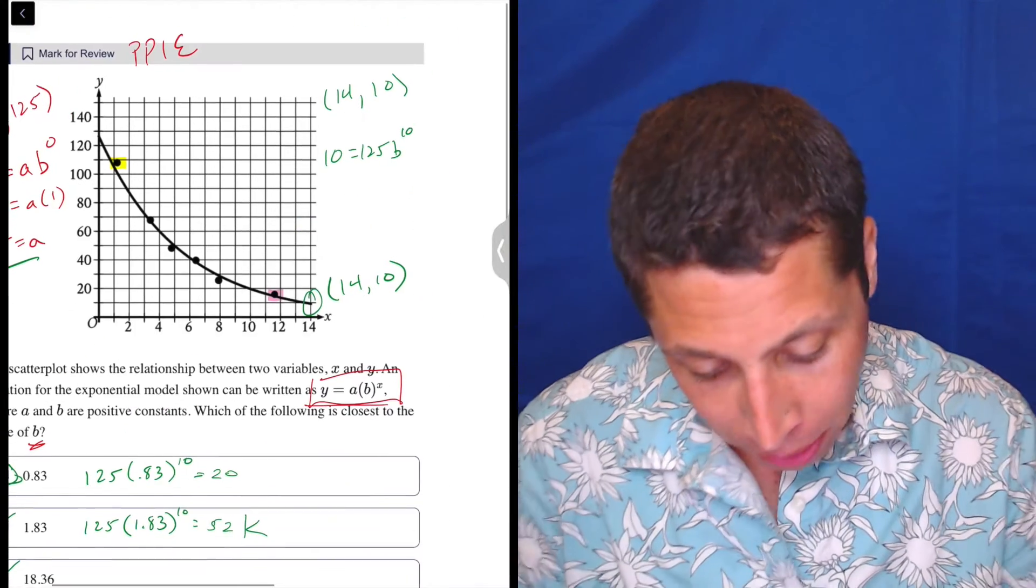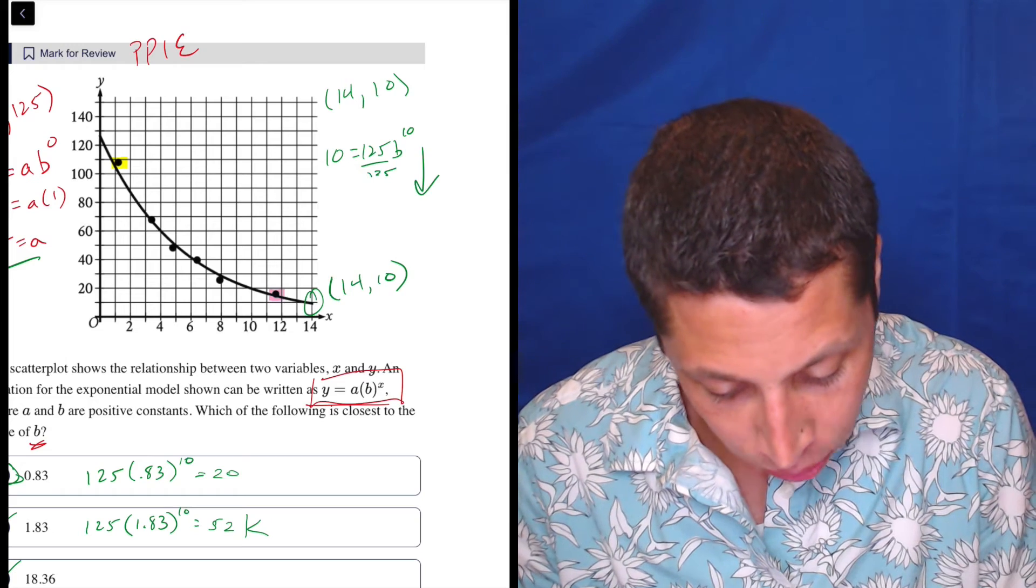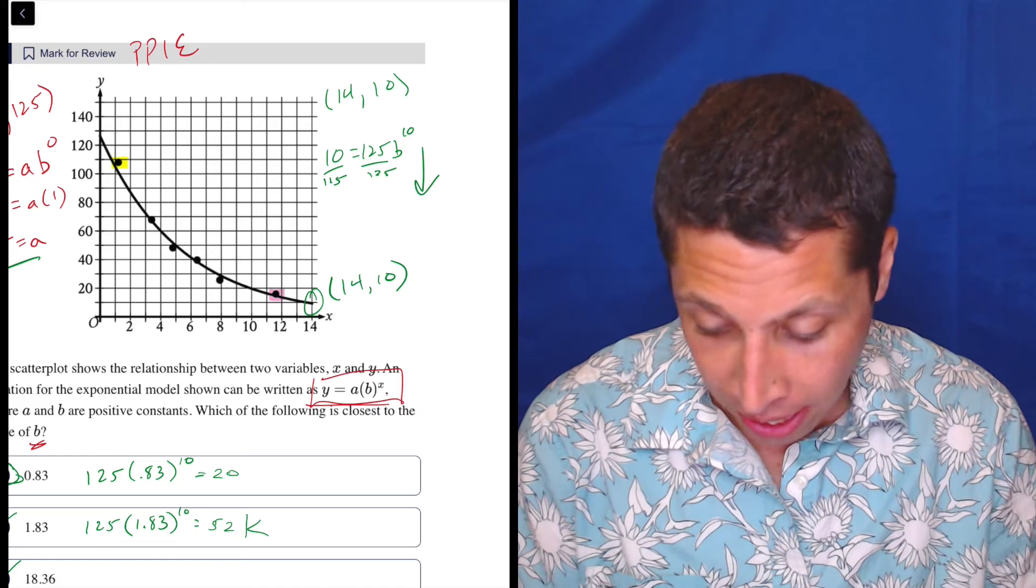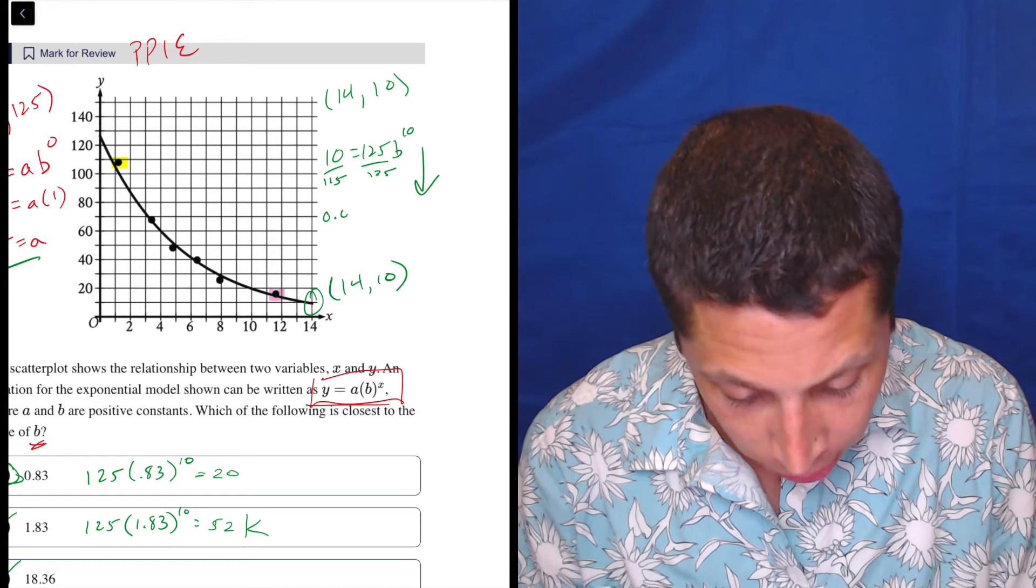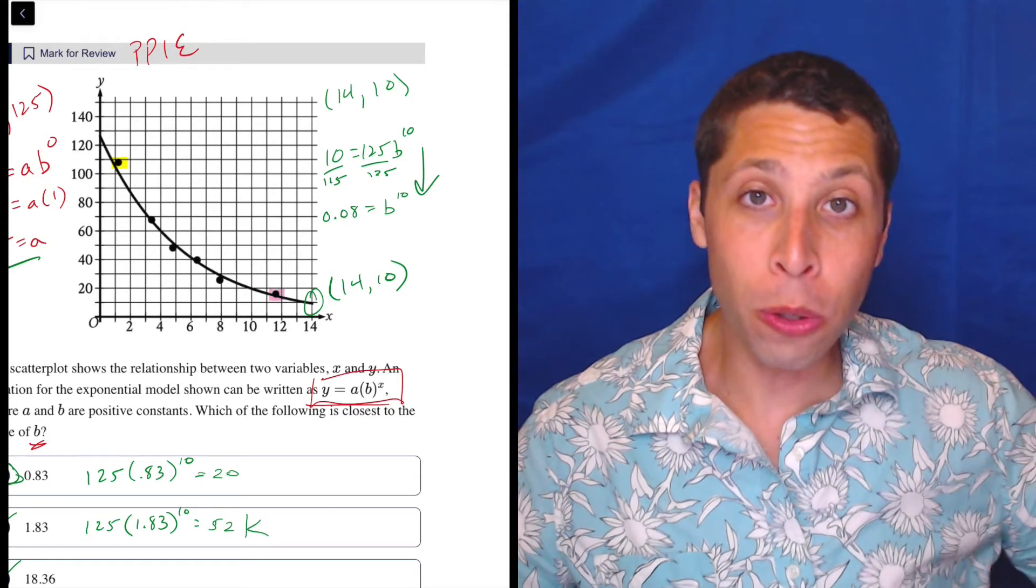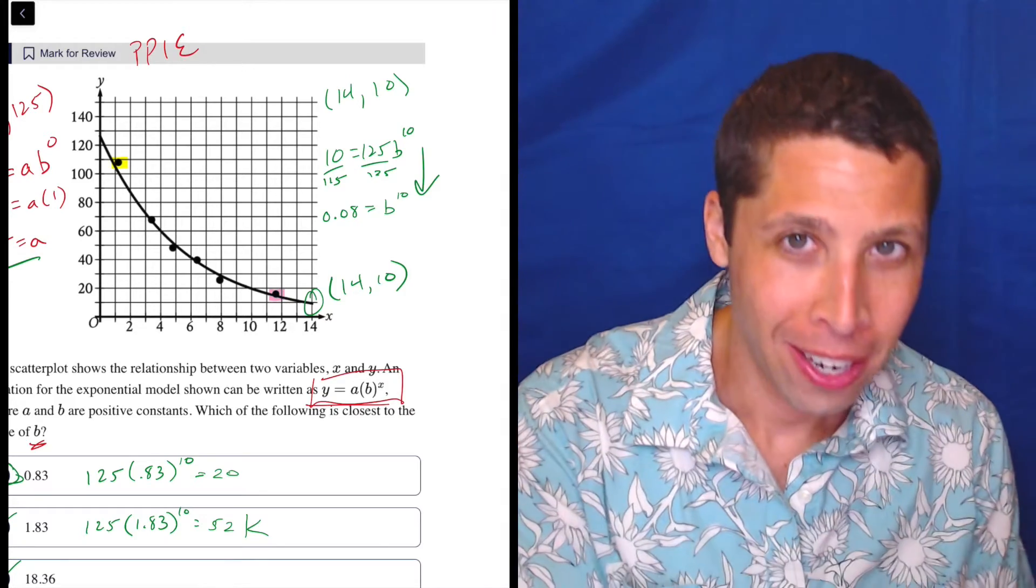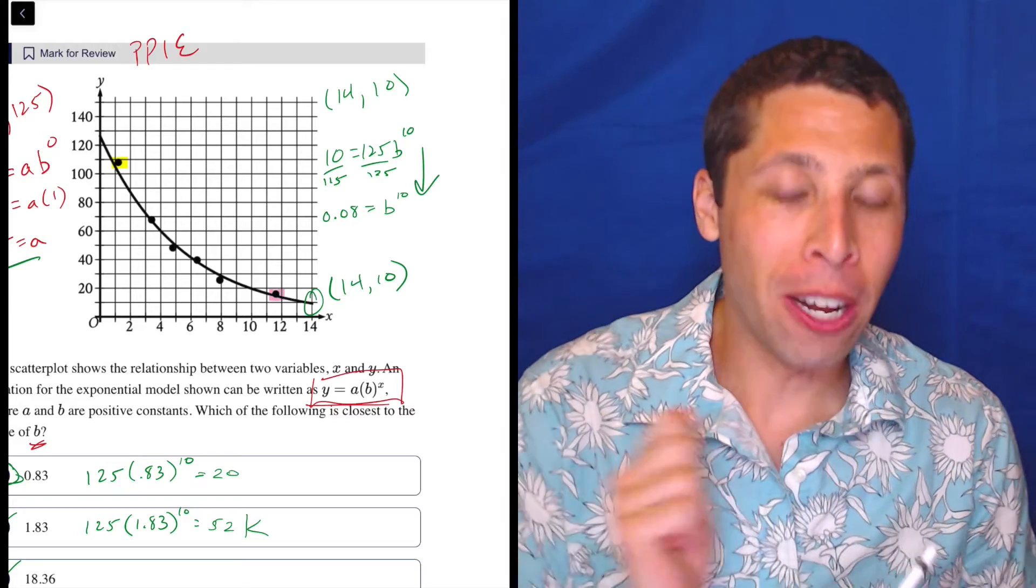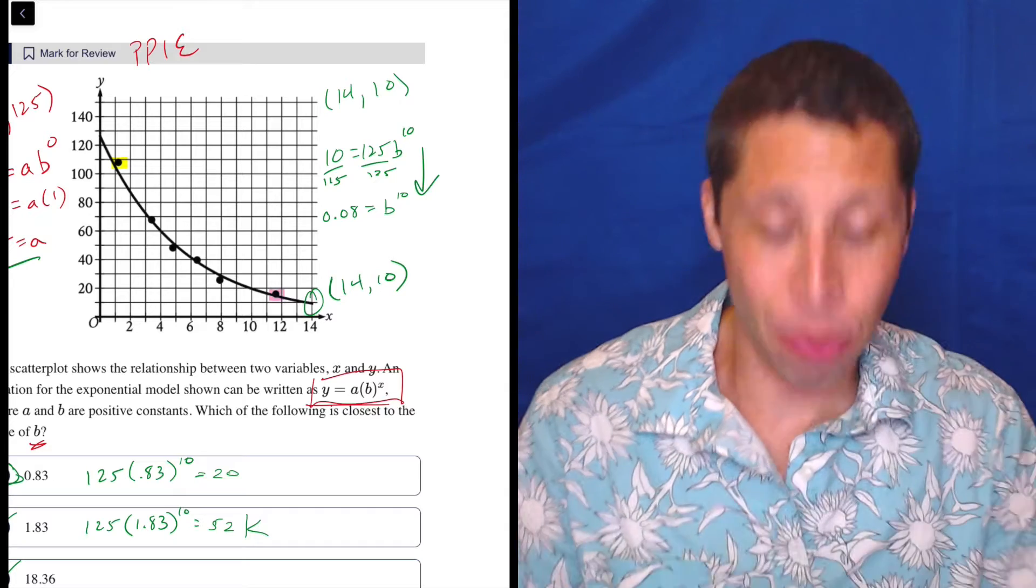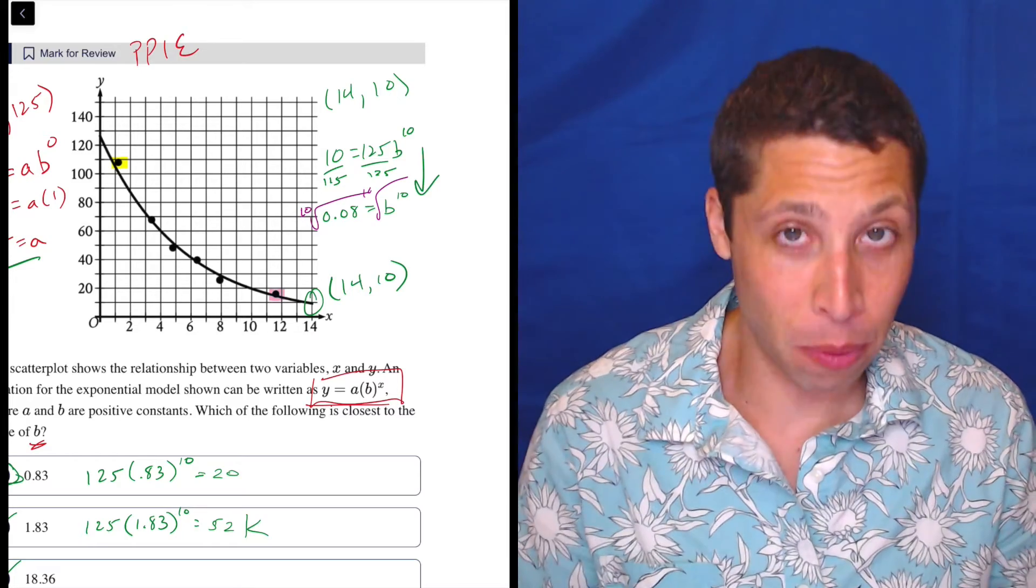So if I were to do it, if I were to kind of continue this path here, I would have had to divide by 125. So 10 divided by 125, I'm just going to do it in this calculator, is 0.08, and that's equal to B to the 10th. So how do you undo an exponent that's that high? So if we undo a square, we have to take a square root. If we undo a cube, we have to use a cube root. So if we undo a 10th, we're going to have a 10th root. So we have to remember where that button is. So the 10th root of both sides is going to give us what we want.